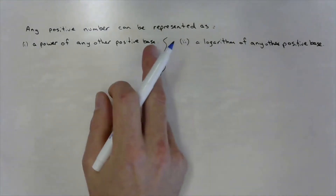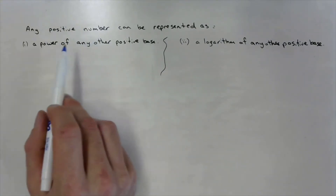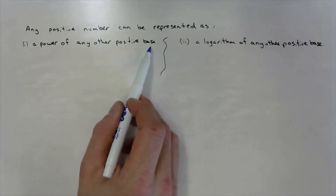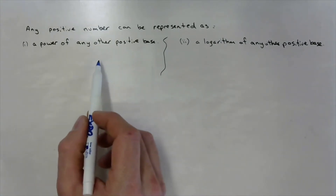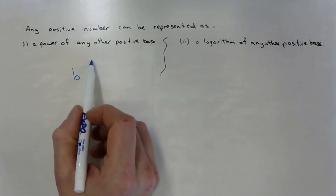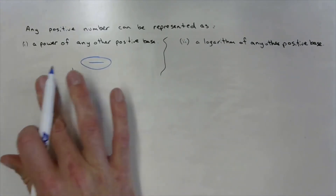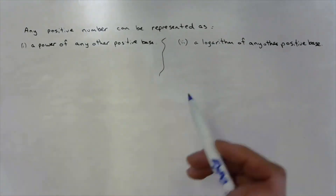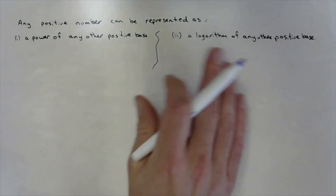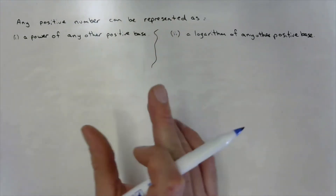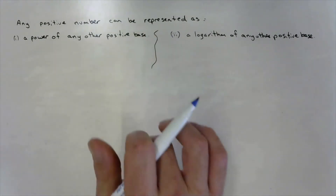We've already experienced both of these things. We can take any positive number and write it as a power of any other positive base — when we did that, we ended up with an exponent that had a log expression. We can also express it as a logarithm of any other positive base. Being able to switch back and forth really helps us solve things.